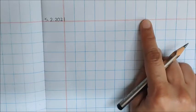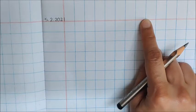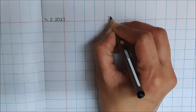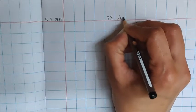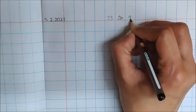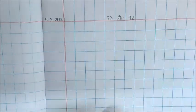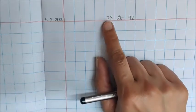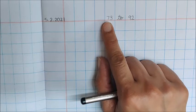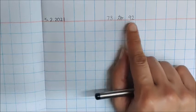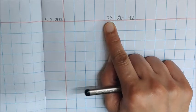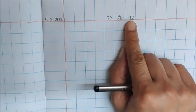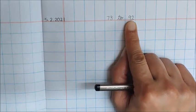Now on the red line write down 73 to 92. Today we are going to write numbers from 73 to 92.